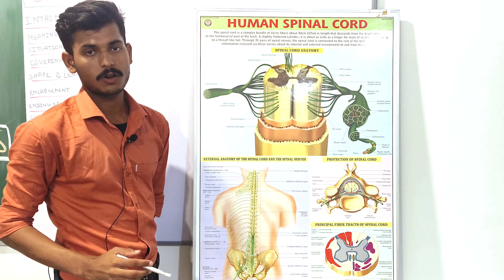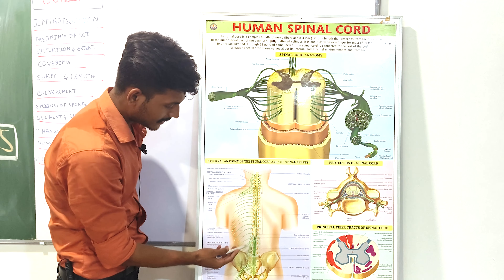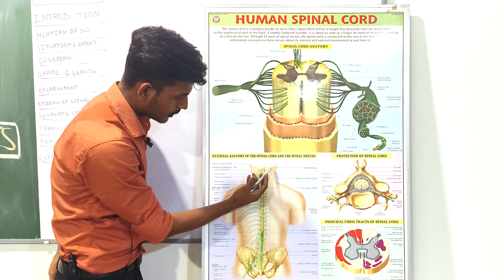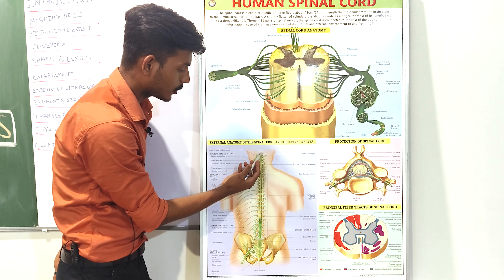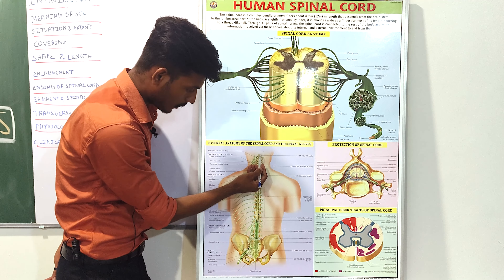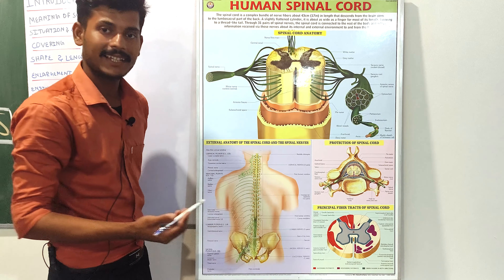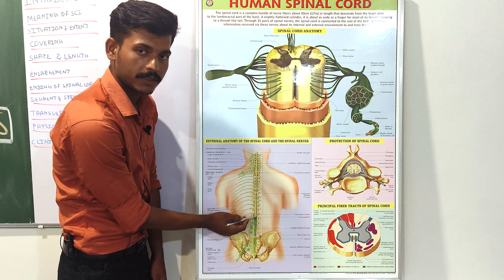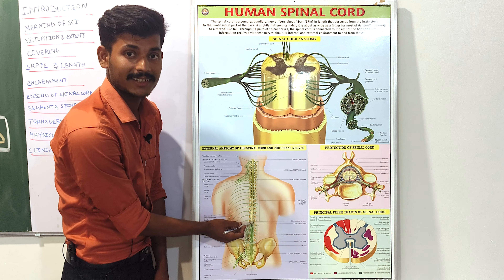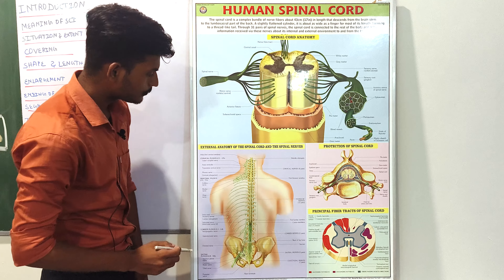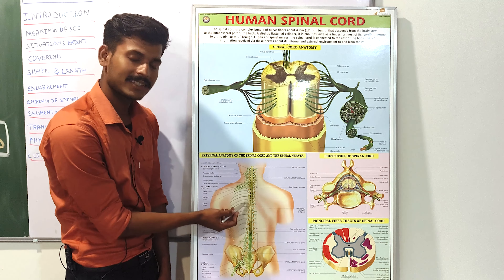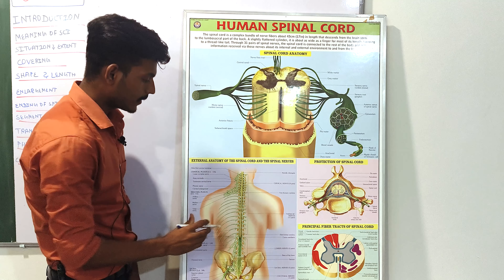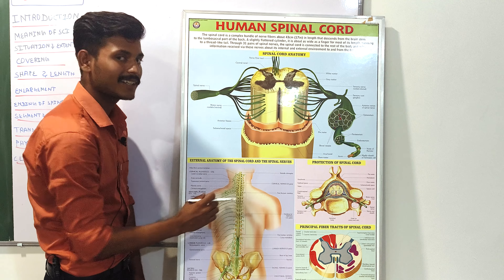After removing the vertebral column we see this structure — this is the spinal cord. It starts from the medulla oblongata and terminates at the L1 or L2 vertebra in adults — that is why we perform lumbar puncture at L3 or L4. Its length is 45 cm in males and 43 cm in females, and it is cylindrical in shape.